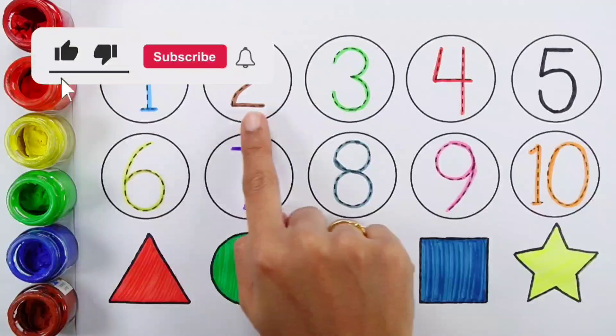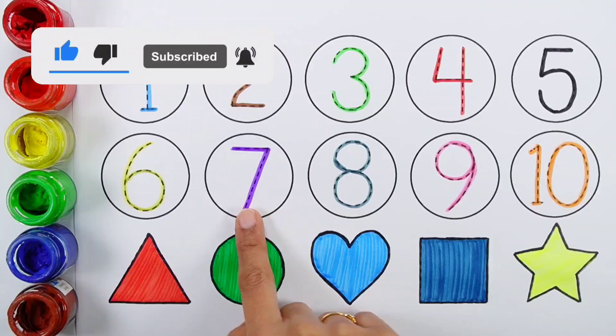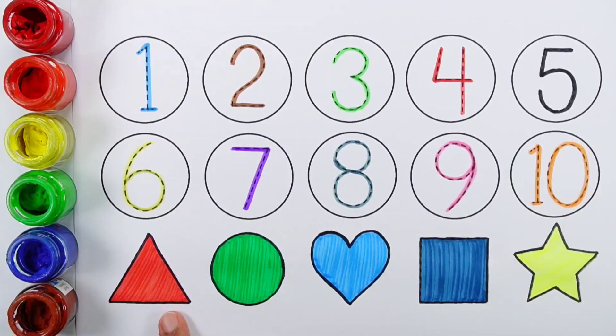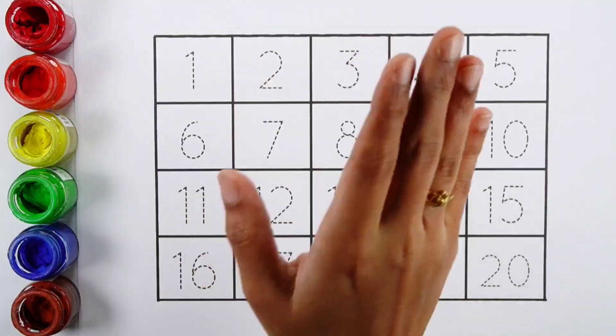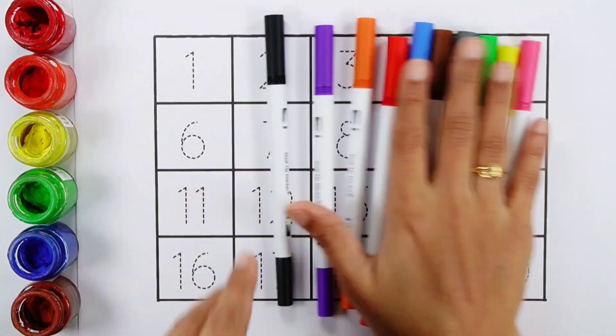1, 2, 3, 4, 5, 6, 7, 8, 9, 10. Triangle, circle, heart, square, star. Hello guys. Let's learn some colors.